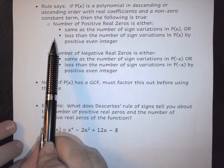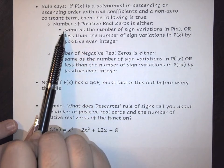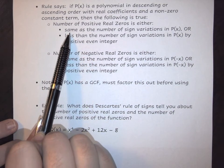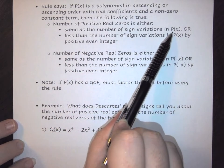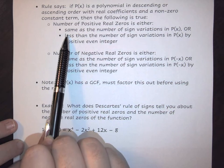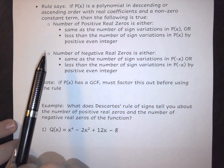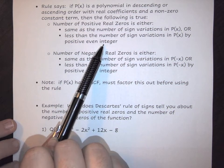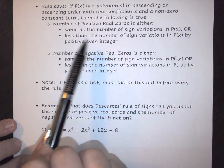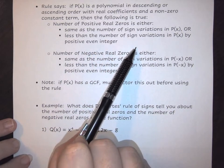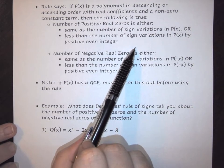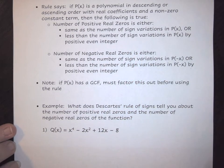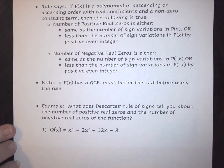For positive real zeros, the count is the same as the number of sign variations in P(x), or less than the number of sign variations by a positive even integer. For example, if your sign variations is 5, then your positive zeros would be 5, 3, or 1. You count backwards by even integers until you can't go further.